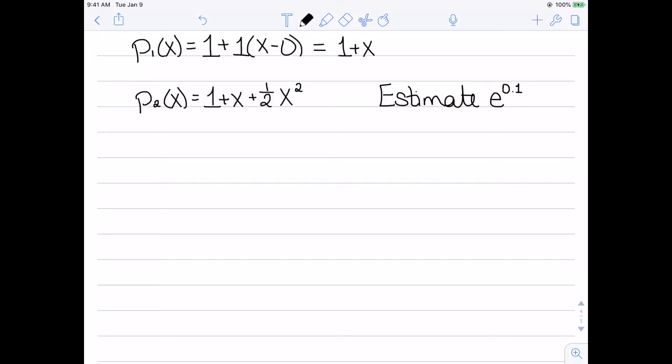So now I want to estimate the value of e^0.1. Before, both of these approximations were estimating e^x, so I'm letting x be equal to 0.1. So let's start with the linear case. I have p_1(0.1), so that's 1 plus x, or 1 plus 0.1, which gives me an estimate of 1.1.